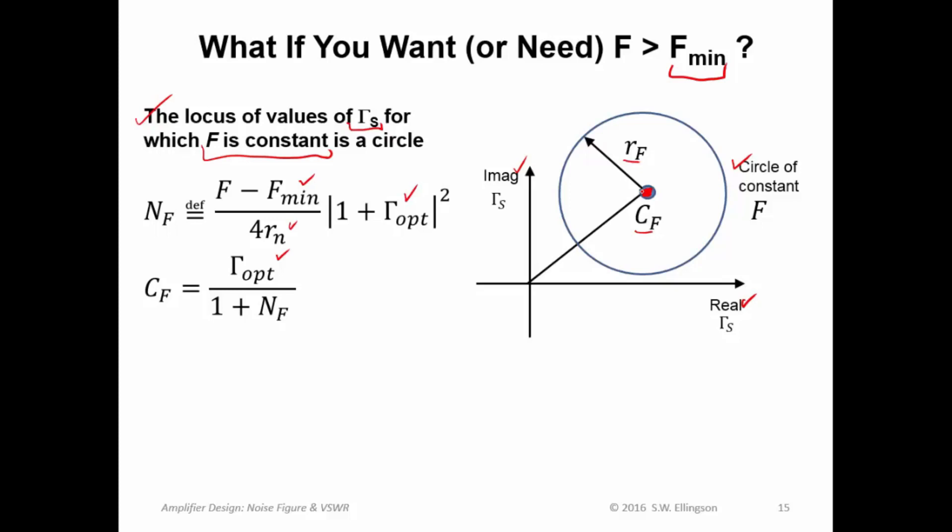I also need the radius of that circle. It turns out the radius of that circle is given by this expression, entirely in terms of gamma_opt and this parameter N_F. So now if we want to determine all the values of gamma_S which give us a certain noise figure, what we do is plug in the noise figure that we're interested in exploring here, calculate N_F. That gives us the center and radius of this circle, and now we know all the values of gamma_S that give us that particular noise figure.